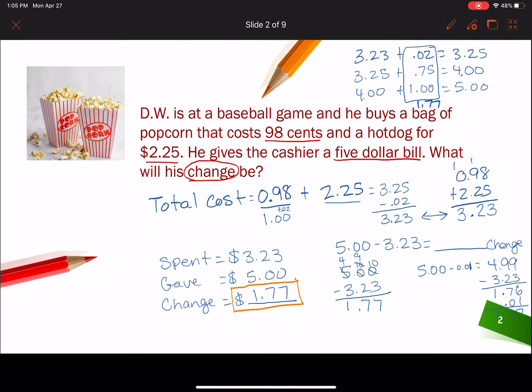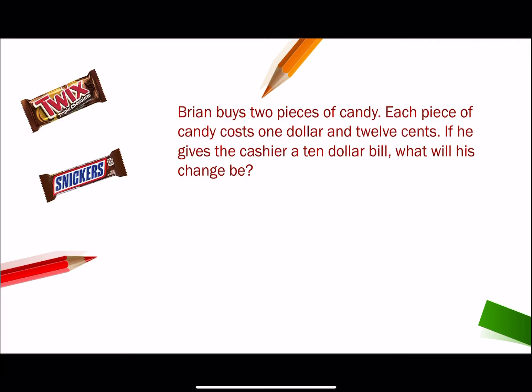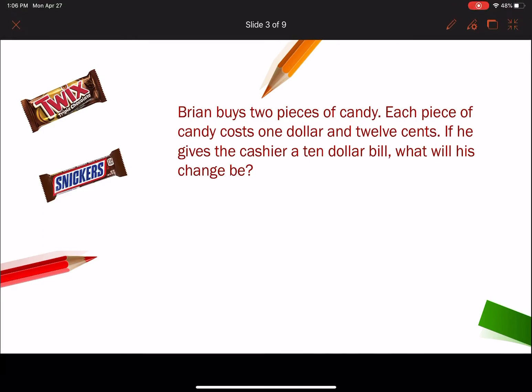Alright. Let's look at another example. Brian buys two pieces of candy. Each piece of candy costs $1.12. If he gives the cashier a $10 bill, what will his change be? Well, let's see. He's buying two pieces of candy. Each one costs $1.12.